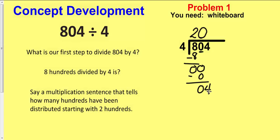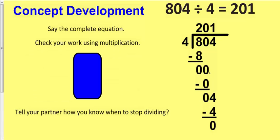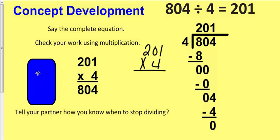Four goes into four once. I multiply 1 times 4, and 4 minus 4 is zero. So my answer is 201. Now I've verified using multiplication — take 201 and multiply it by 4. It should give you 804. And it does, so our answers match.